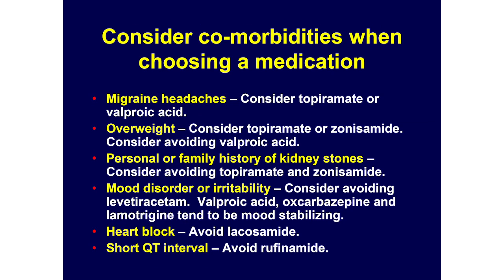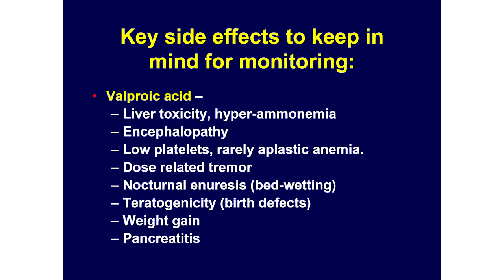In considering comorbidities: some medications work on both seizures and migraines, so if migraines are an issue, you choose those. If weight is an issue, you may choose or avoid medications based on that. Family history of kidney stones comes into play for some. Mood or behavior issues — for example, Keppra can cause irritability. If there's heart block, you would avoid lacosamide. If there's a short QT interval, you would avoid rufinamide. There's also the issue of drug-drug interactions: some medications rev up liver enzymes and make other medications metabolized faster; valproic acid inhibits the clearance of lamotrigine, so if you stop valproic acid, you need to double the dose of lamotrigine.